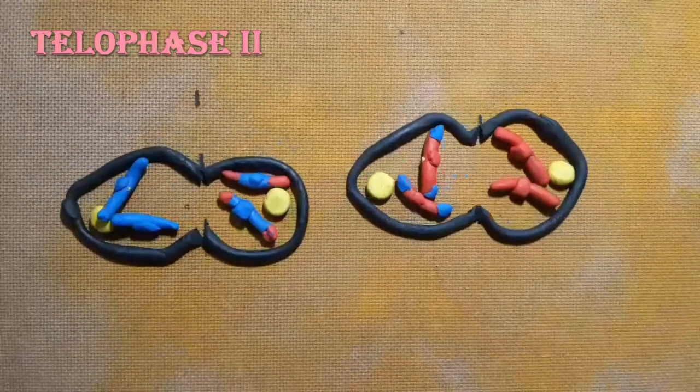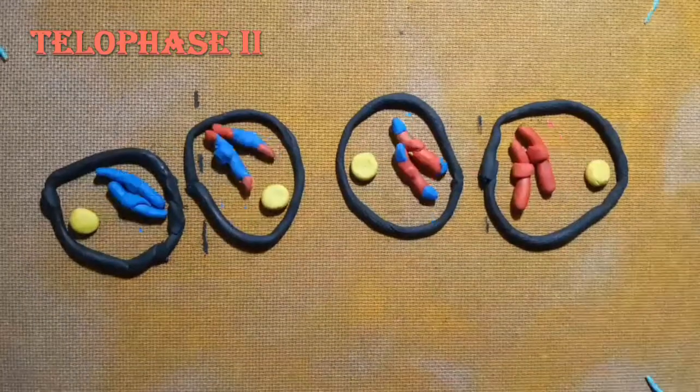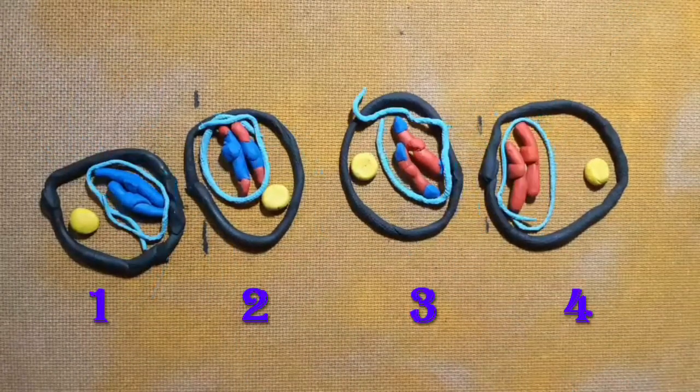Chromosomes are pulled to the opposite side. Spindle fibers break down. Cytokinesis happens. Nuclear membrane reform. At the end, we have four daughter cells.